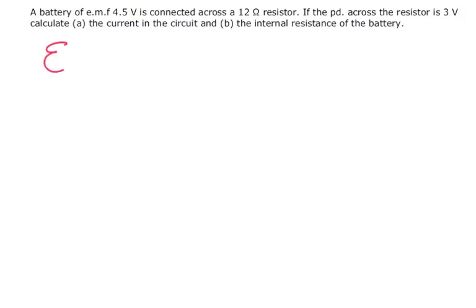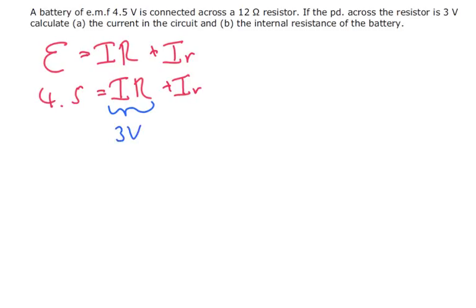So again we're going to use our formula. Now what do we know? Well, we know that EMF is 4.5. We're also told that IR is equal to 3 volts, and we also know that big R is 12.